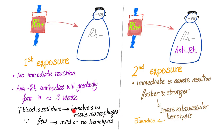Hemolysis occurs by tissue macrophages, such as splenic macrophages, so it's extravascular hemolysis. You can have jaundice, increased unconjugated bilirubin, high LDH, low haptoglobin — all signs of hemolysis and jaundice. This doesn't have to be from a blood transfusion; it could be from labor during pregnancy, abortion whether elective or spontaneous, or a ruptured ectopic pregnancy.